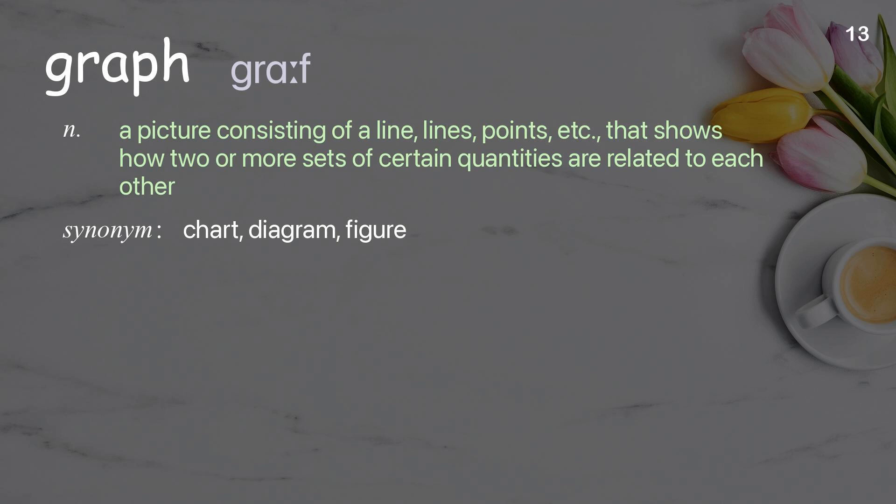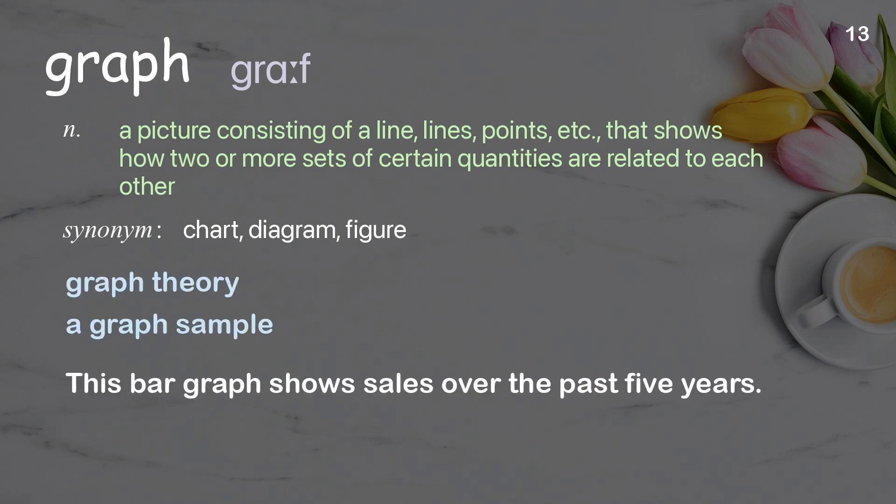Graph: a picture consisting of a line, lines, or points that shows how two or more sets of certain quantities are related to each other. Examples: graph theory, a graph sample. This bar graph shows sales over the past five years.